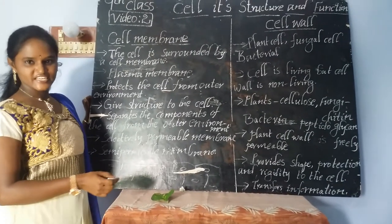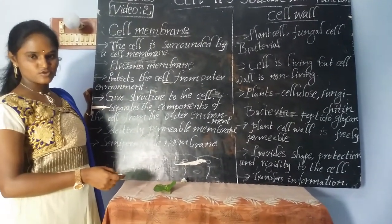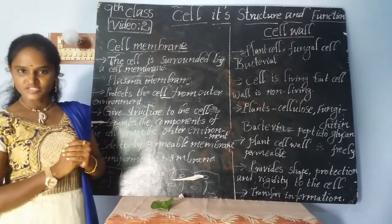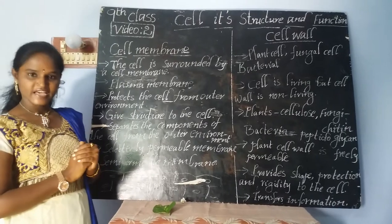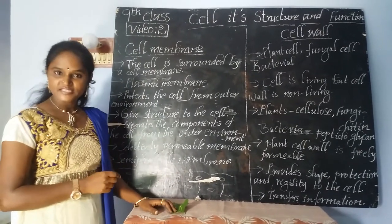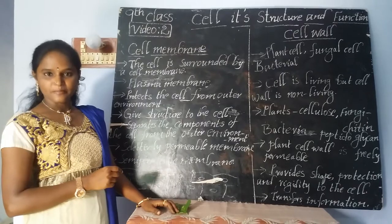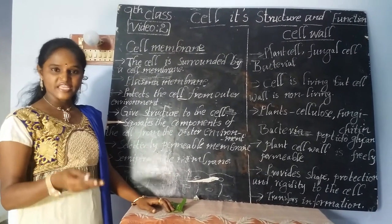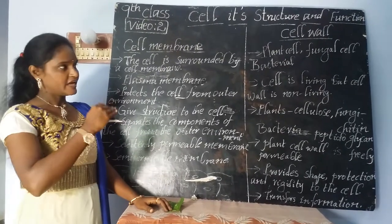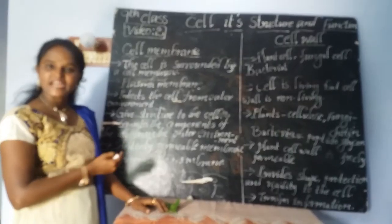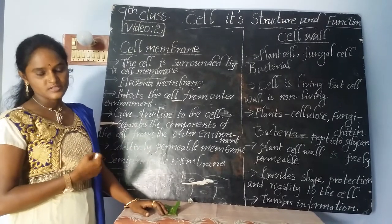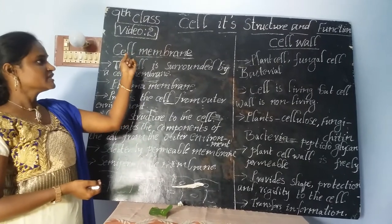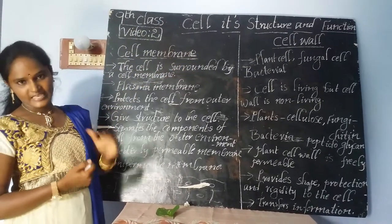Welcome students. Today we are going to discuss about the outermost layers of the plant cell and animal cell. In the previous session, we discussed about the cell, history of the cell, microscope and cell organelles present in the cell, and the differences between plant cell and animal cell. Today in detail we are going to discuss about the cell membrane and cell wall.